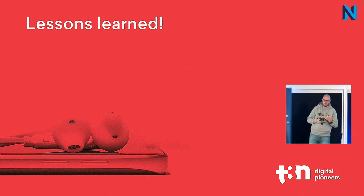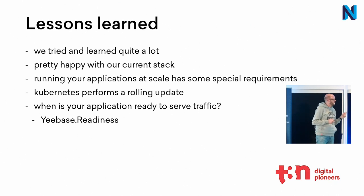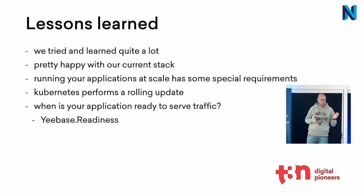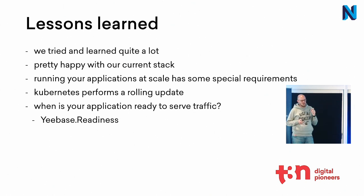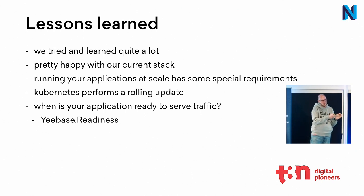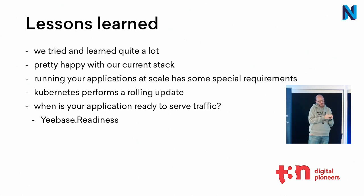That was the infrastructure part — tools to manage the cluster. But we had some lessons learned and I'd like to point out one of the most important for us. First, try it out — check Minikube, you can create a cluster locally, no problems, just get in touch with the technique. We learned a lot and we're pretty happy with our current stack. Running applications at scale has some special requirements: if you have 10 instances of your Flow or Neos application, you really get some pitfalls. The biggest one is: when is your application ready to serve traffic? If a pod is going down and another pod is spawning, when should Kubernetes point traffic to it? Kubernetes makes a rolling update by default — if you have 10 instances and an 11th is spawned, as soon as it's ready, another one will shut down and so on.